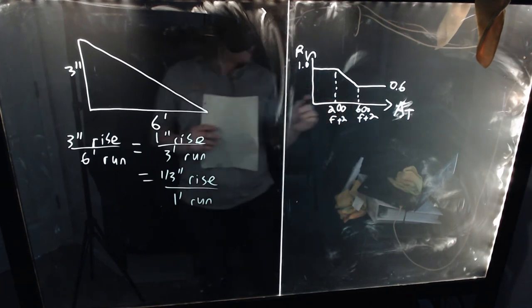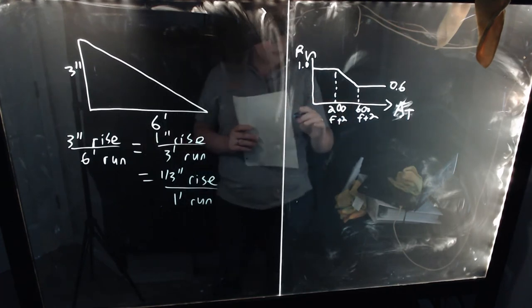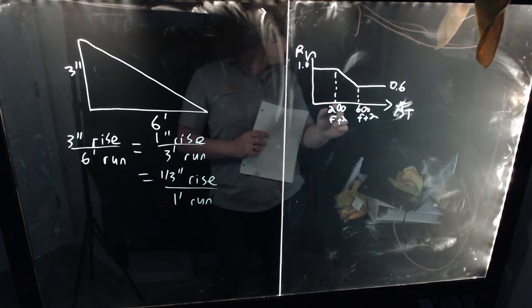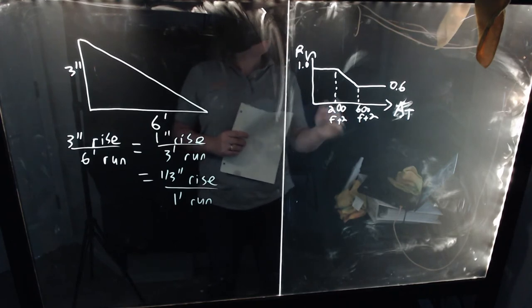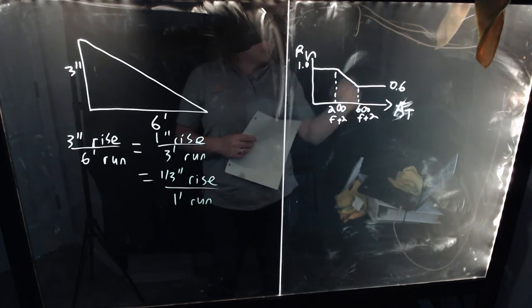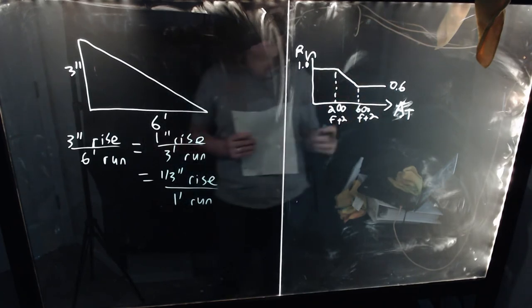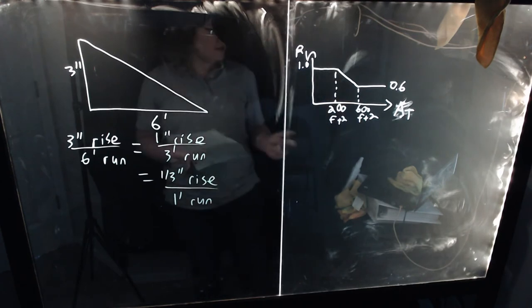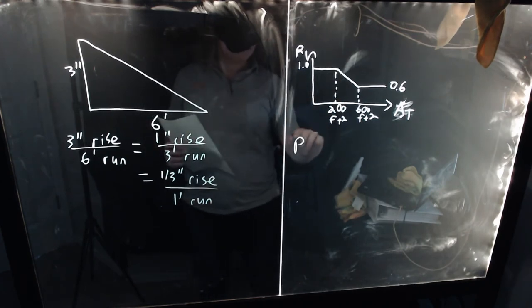And then we just have the interpolated line between them. So up to 200 square feet, you're going to be at 1.0. Past 600 square feet, you're going to be at 0.6. And between them, you just find where you lie along the line between those two extremes.